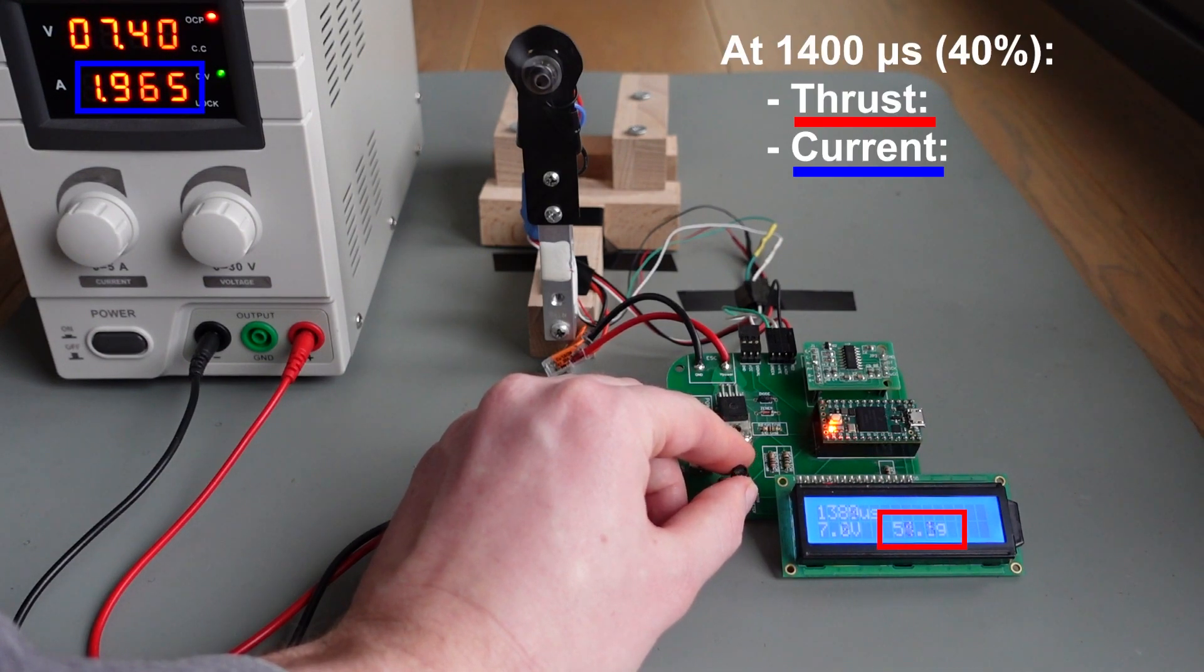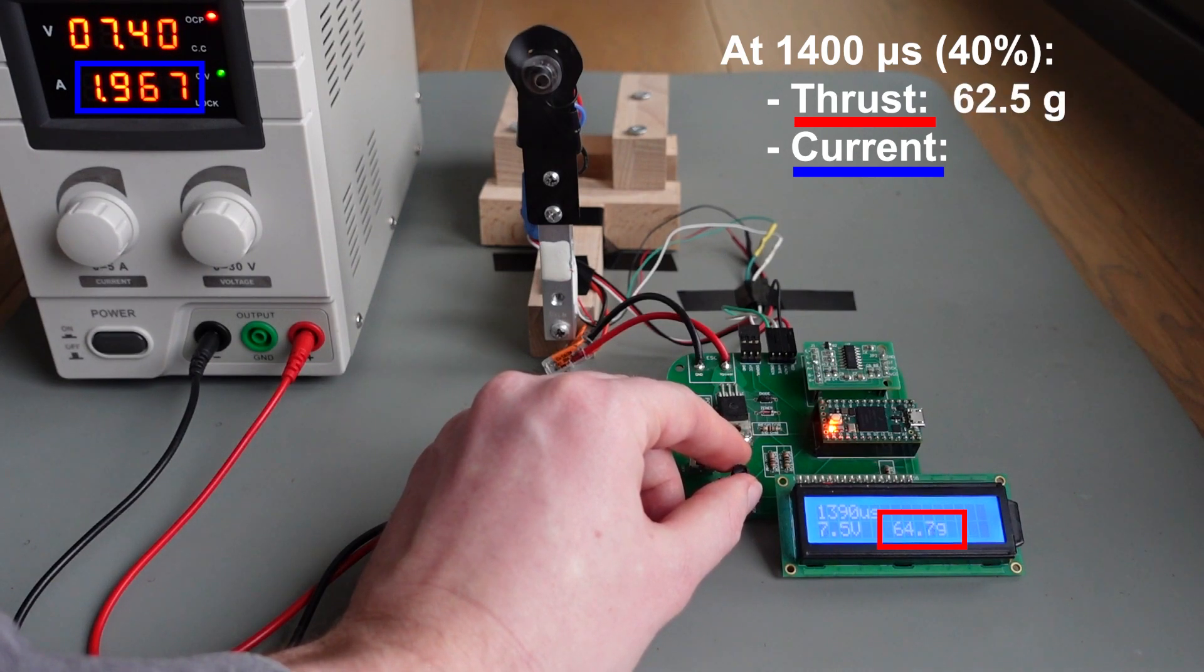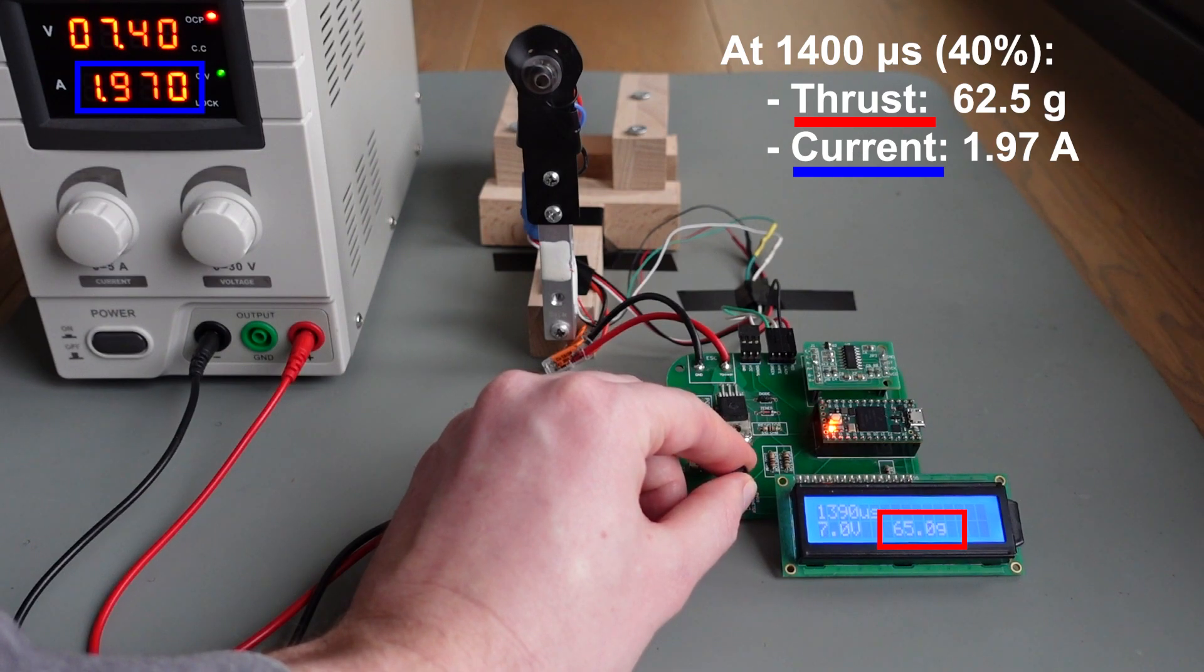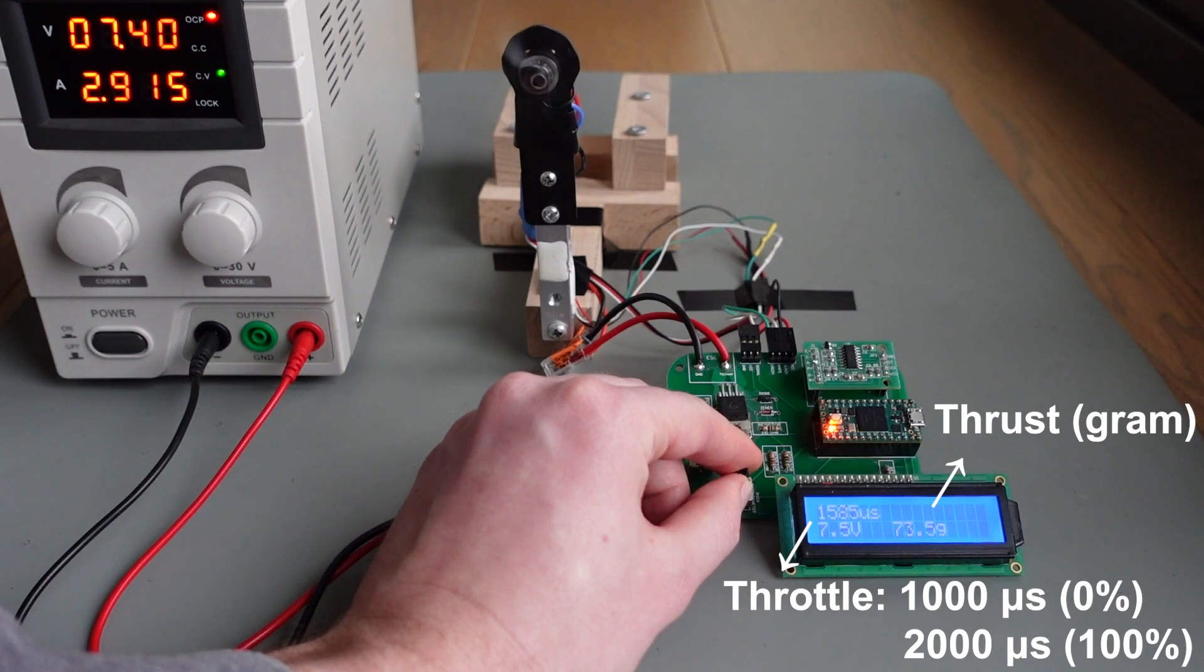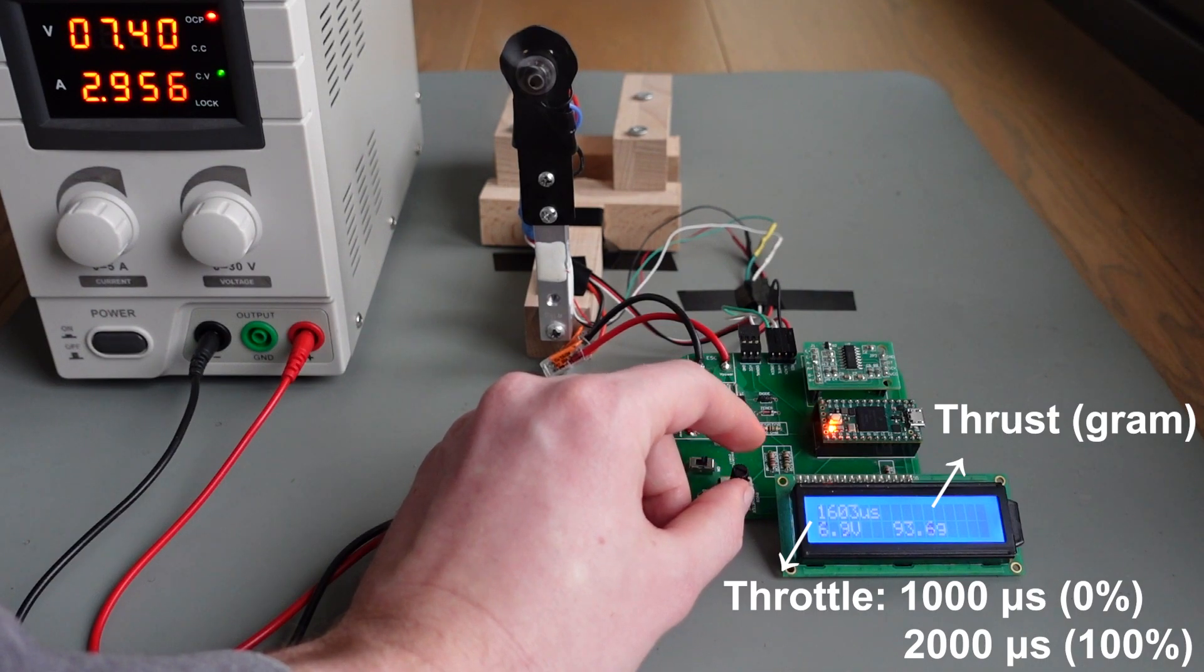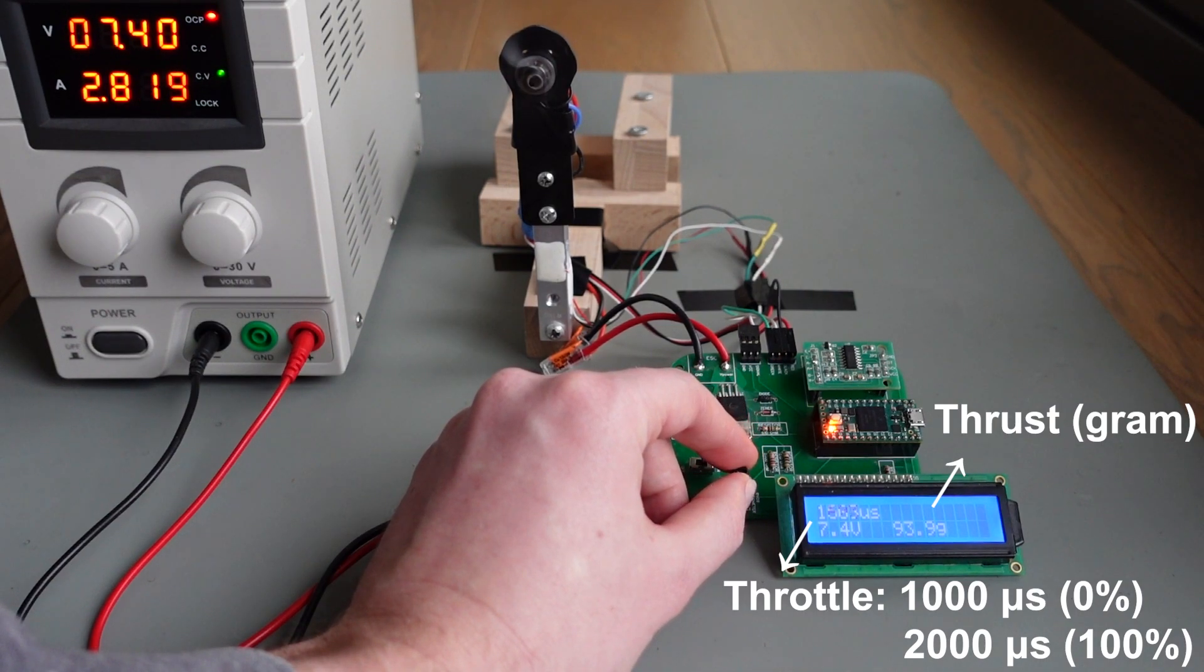Once we reached the power level of 40%, we see that this corresponds with a thrust of 62 grams and a current of almost 2 amps. 62 grams is also the exact thrust that we need to keep the quadcopter floating in the air, because 4 times 62 equals 250 grams, which is the total weight of our drone.